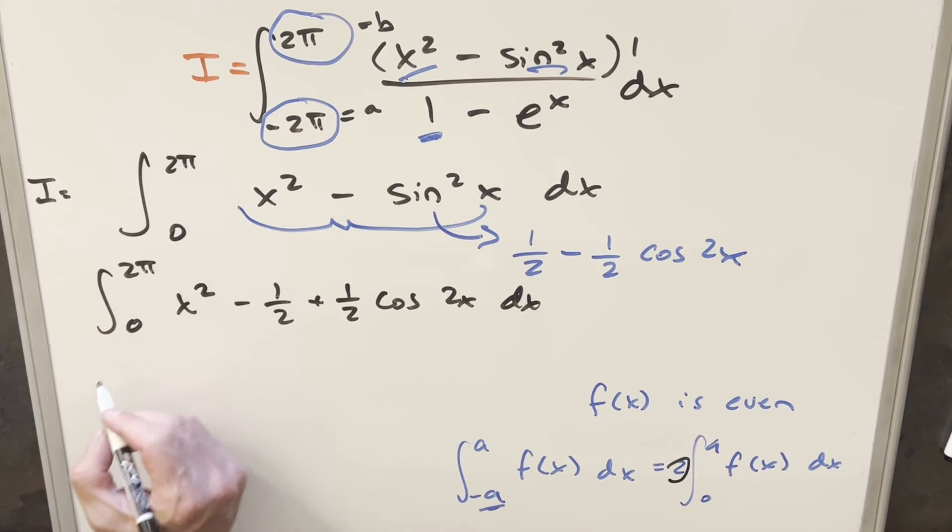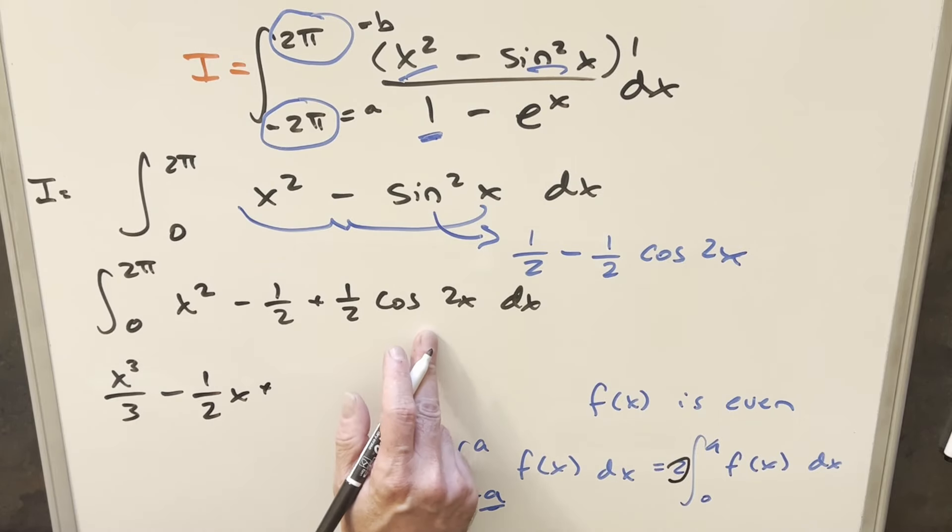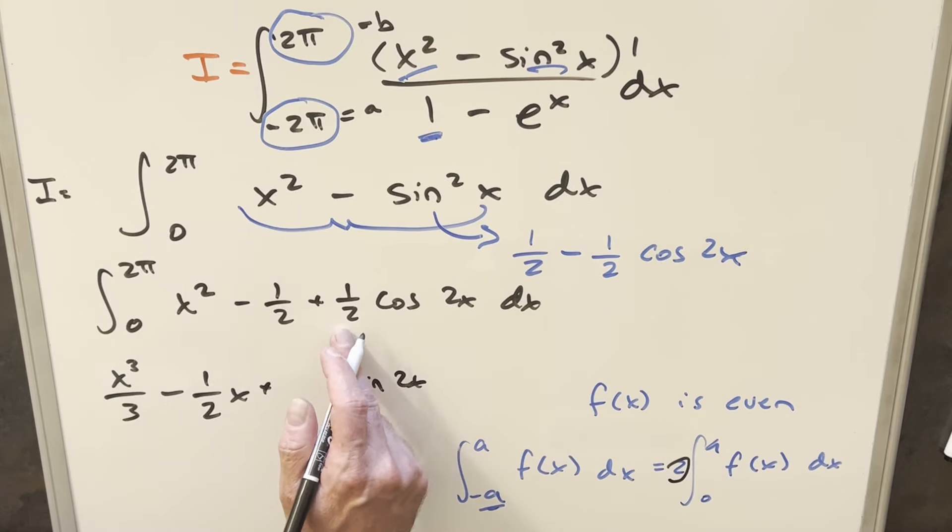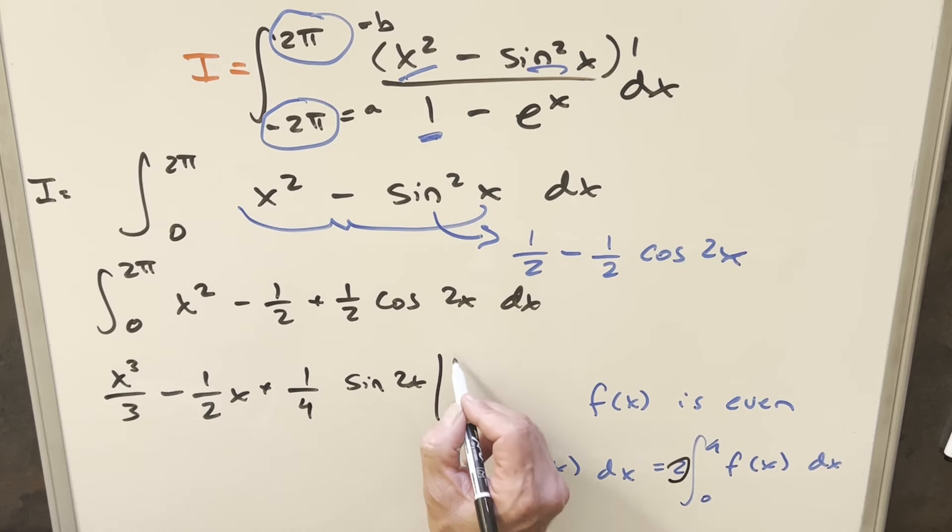Go ahead and integrate. This is going to become x³/3 minus here, this will be (1/2)x. And then here we're going to have the 1/2 in front, integral of cos(2x) is going to be sin(2x). We bring out a 2 in the denominator times 1/2, this is going to give me 1/4 here. And we just need to evaluate from 0 to 2π.